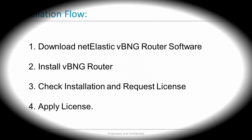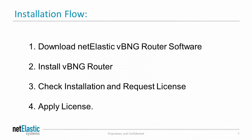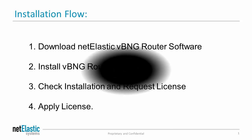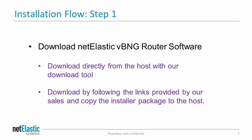Now let's take a look at the installation flow. First, we download the NetElastic vBNG router software installer package. Second, we install the vBNG router. Then we check the installation to make sure everything is running. Then we request a license, and lastly we apply the license, and then we're done.